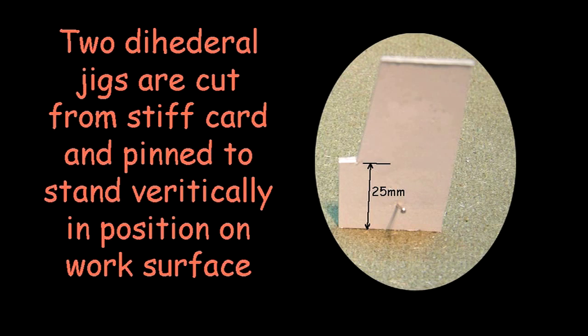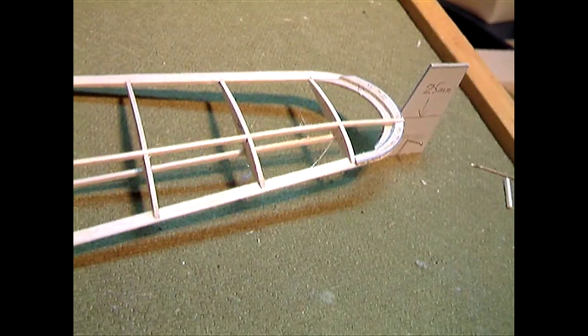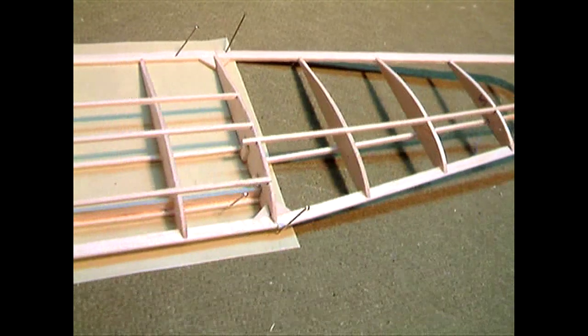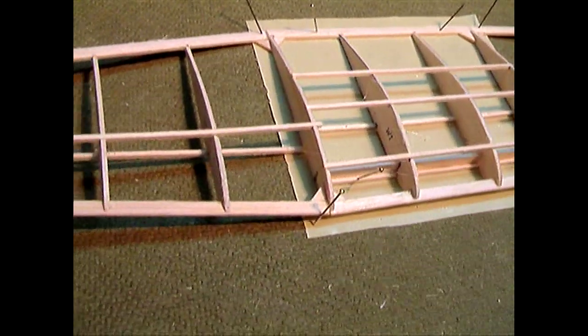To accomplish this, I cut two stiff card jigs as wingtip supports and pinned them to my building board. I could then glue the wing sections together and add the top stringer spars to stiffen the join at its correct angle.